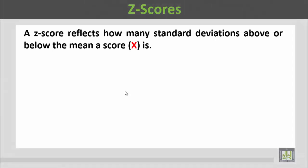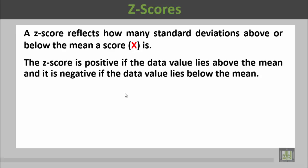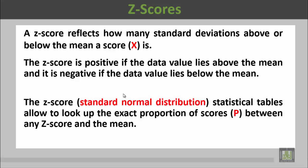A z score reflects how many standard deviations above or below the mean score x is. The z score is positive if the data value lies above the mean, and negative if the data value lies below the mean. إذا كانت القيمة أصغر من المتوسط الحسابي فالـ z score سيكون سالباً، وإن كانت أكبر من المتوسط الحسابي فإن z score سيكون موجباً.